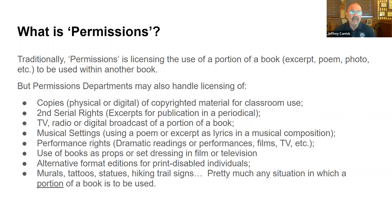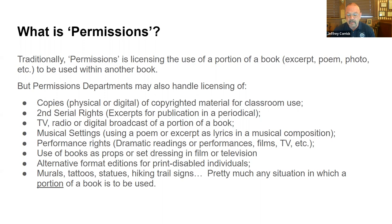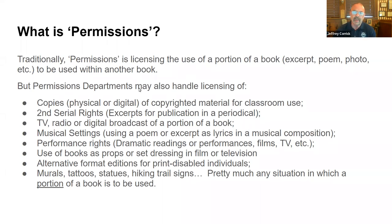At Penguin Random House, second serial rights may be handled by my department or by the sub rights department, depending on what imprint you're talking about. Digital licensing handles the use of works in apps or online courses. Our legal department handles commercial rights and film rights. My department handles amateur dramatic rights, but the sub rights department handles professional. While the sub rights department usually handles reprints of full works, the permissions department at PRH handles full works being used in an anthology. At the various publishing houses where I've worked, it's been any combination of those things. But generally, you can count on the permissions department to handle excerpts from one book being used in another book, or generally excerpts being used in most other contexts.